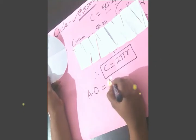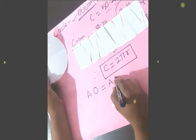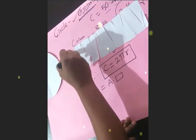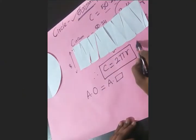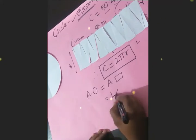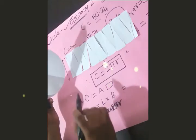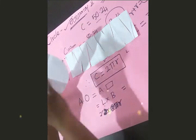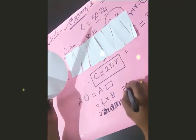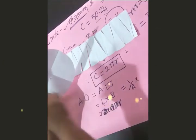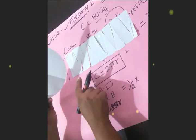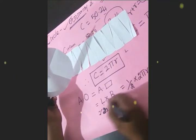Now, the area of the circle equals the area of that rectangle. If we know the area of a rectangle, we multiply the length by the width — L × B. If you look at the length of the rectangle, it comes from the circle. Since only one side is used, we say it is half of the circumference of the circle.